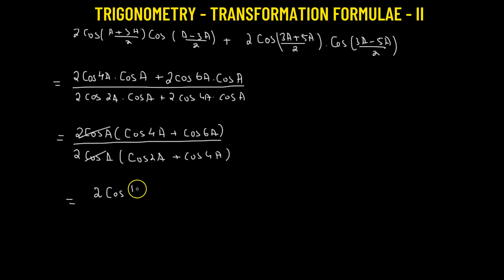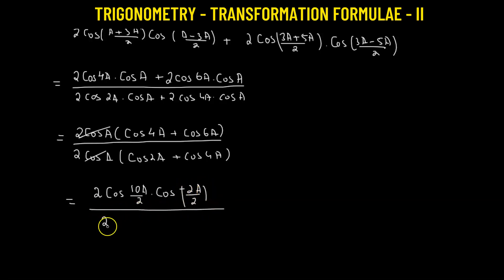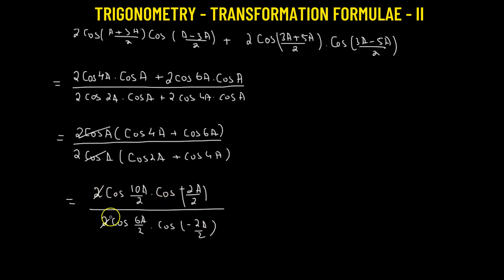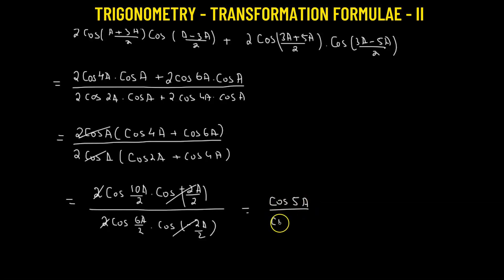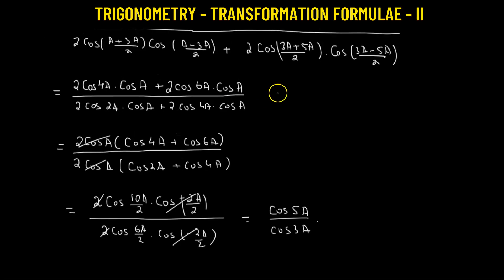We get 2 times cosine of (10a/2) multiplied by cosine of (−2a/2), all divided by 2 times cosine of (6a/2) multiplied by cosine of (−2a/2). We can factor out 2 and cosine(−2a/2) from the numerator and denominator, leaving us with the ratio cosine of 5a to cosine of 3a. This is the final value of the given expression.